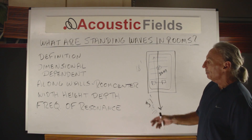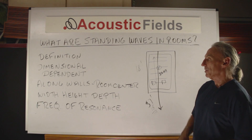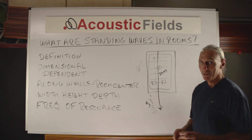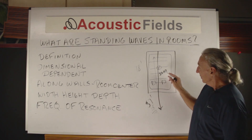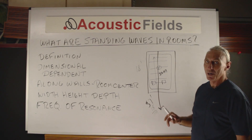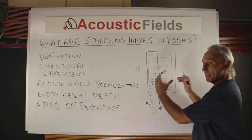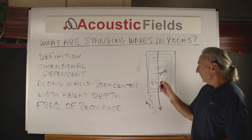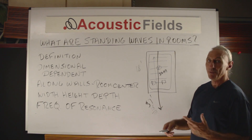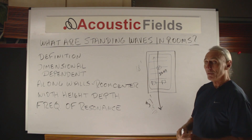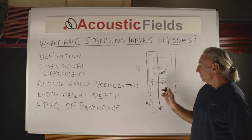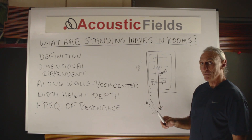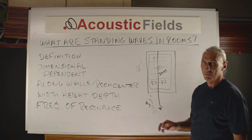A standing wave is an area of pressure usually found in the room center. It has a width, height, and depth to it, and it also has a frequency of resonance. This 30 cycle wave that we use as our example will create pressure areas within the room that have a fundamental of 30 hertz with harmonics on top of it. So they're very powerful — depending on the dimension and volume of the room, they can be plus 10, plus 15, or even plus 20 dB in some situations.